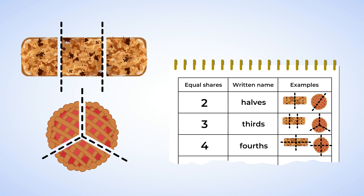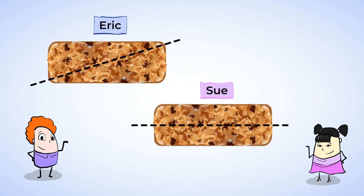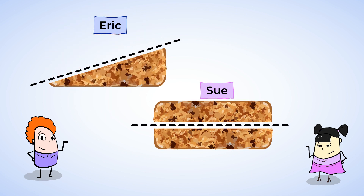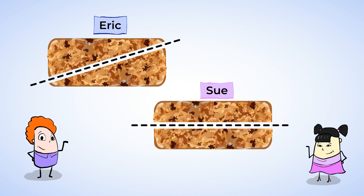Great job! Now we've created two, three, and four equal shares using the granola bars and the apple pies. Eric and Sue have come into the store, and they want to share a granola bar too. They each drew a way that they could cut the granola bar. Do both of their ideas show two equal shares? Yes — both drawings cut the granola bar in half. It doesn't matter that they look completely different. You can see that in Eric's, both pieces are the same size, and in Sue's, both pieces are the same size as well. Either way they cut it, Eric and Sue will each get a half of the granola bar.